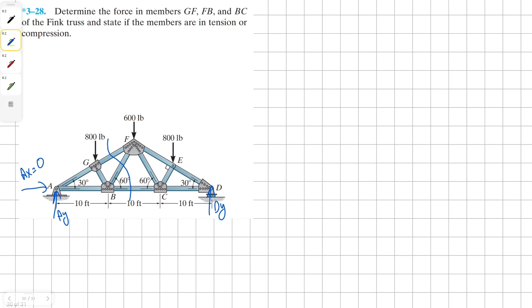All right, to begin, let's take a moment about point D in order to find our Ay, because that's the only external reaction force we need to find to solve this problem. So we're going to have moment at D. We have our first external reaction force of 800 pounds, and it's going to be counterclockwise, therefore positive.